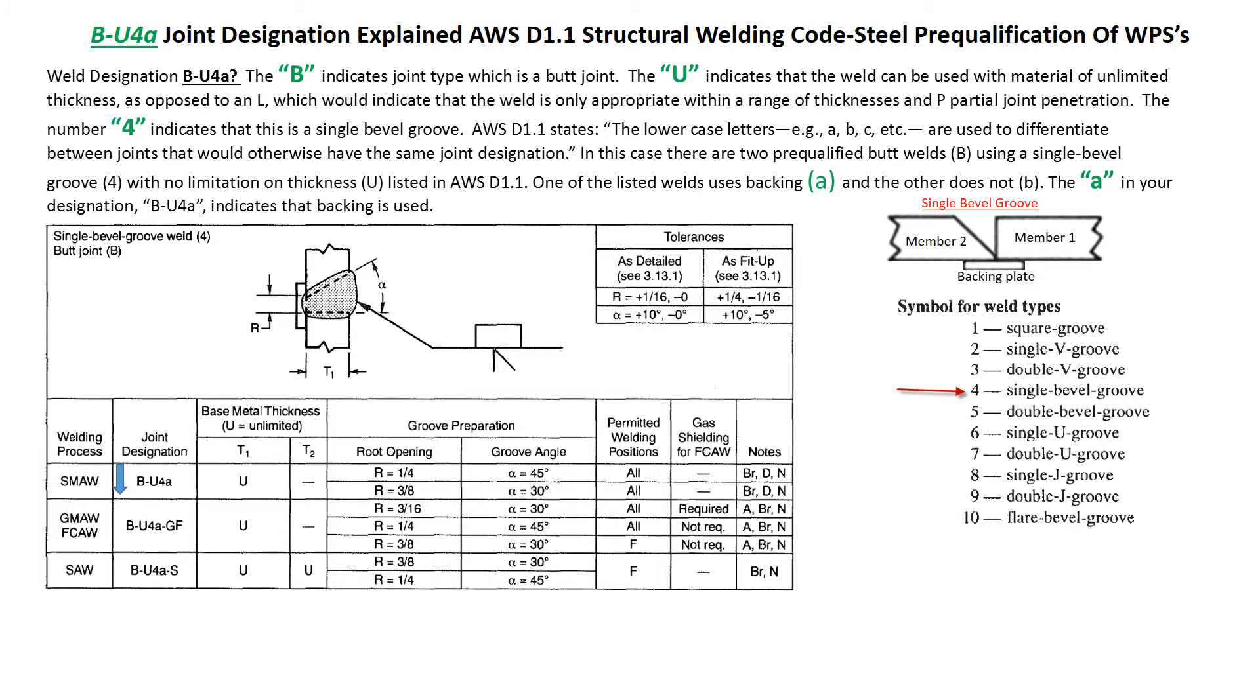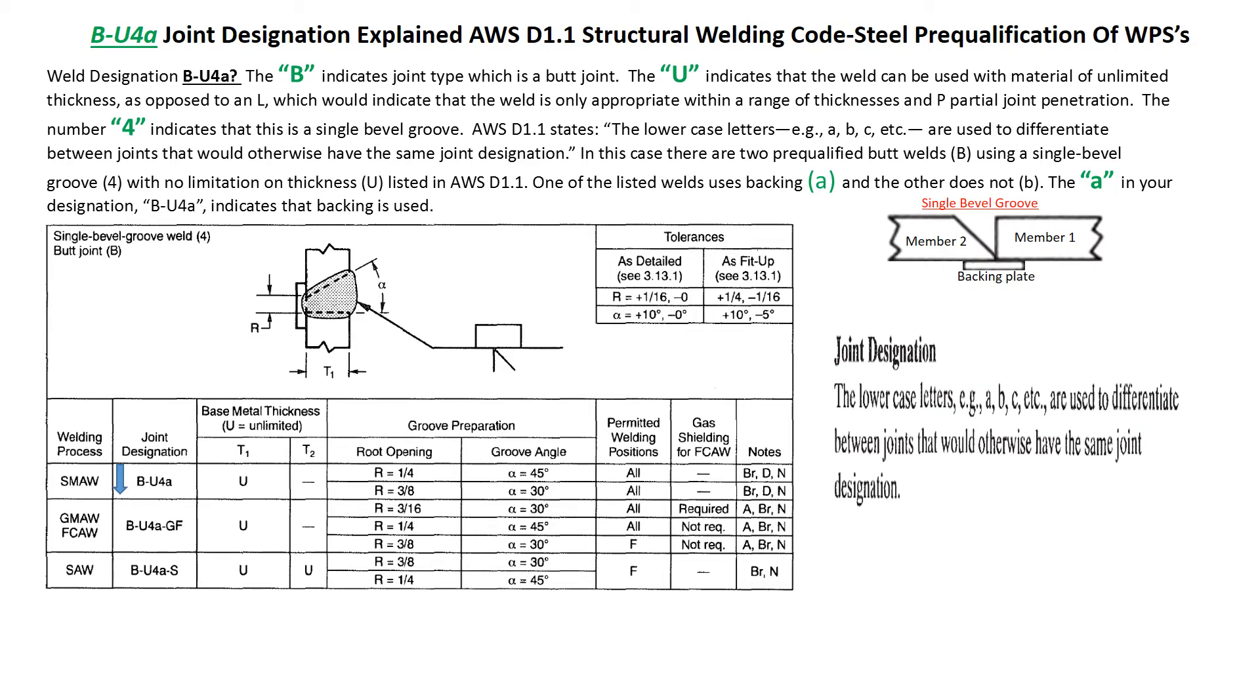And following the number 4 is the lowercase letter A, which is used to differentiate between joints that would otherwise have the same joint design. So this small lowercase letter A lets you know that this joint design will have a backing.